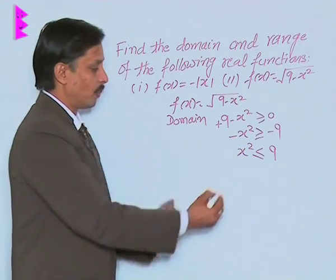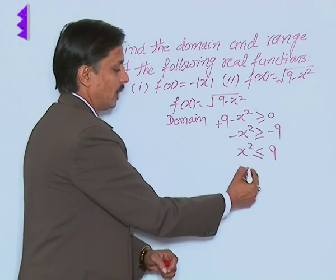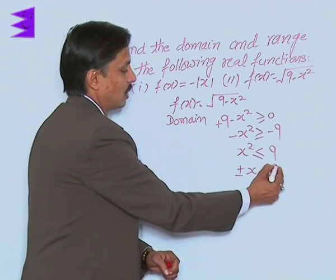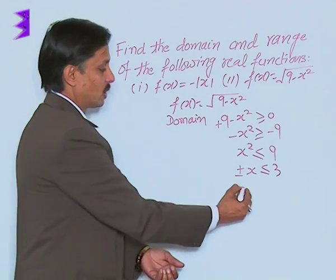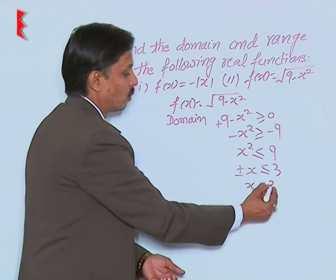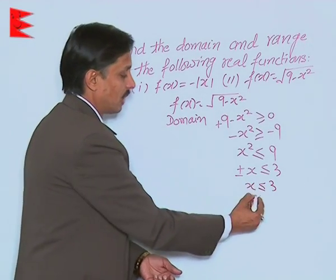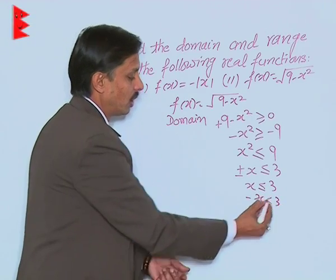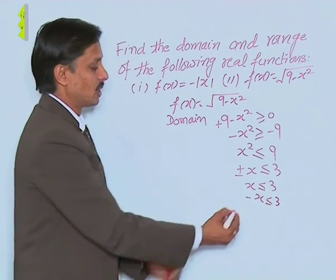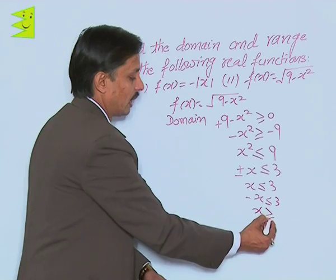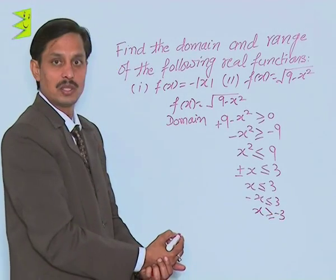If we take the square root of both sides, we will obtain plus minus x is less than 3. That means plus x is less than or equal to 3, minus x is less than or equal to 3. Similarly, when this minus is transferred here, we get x is greater than or equal to minus 3.